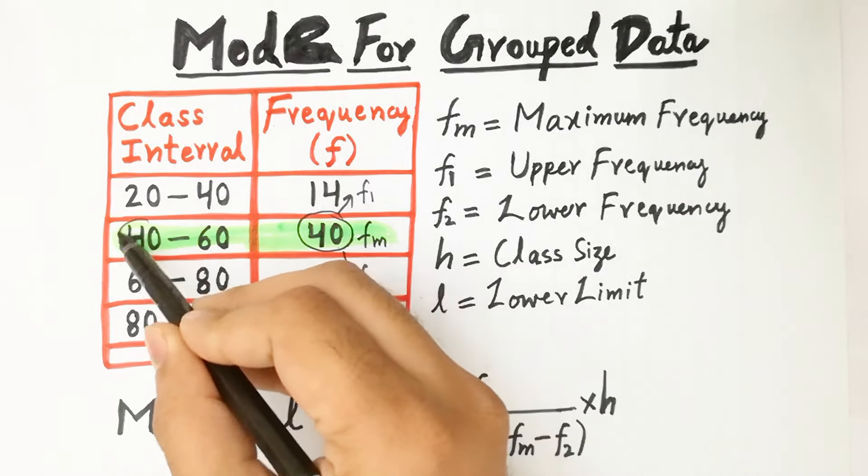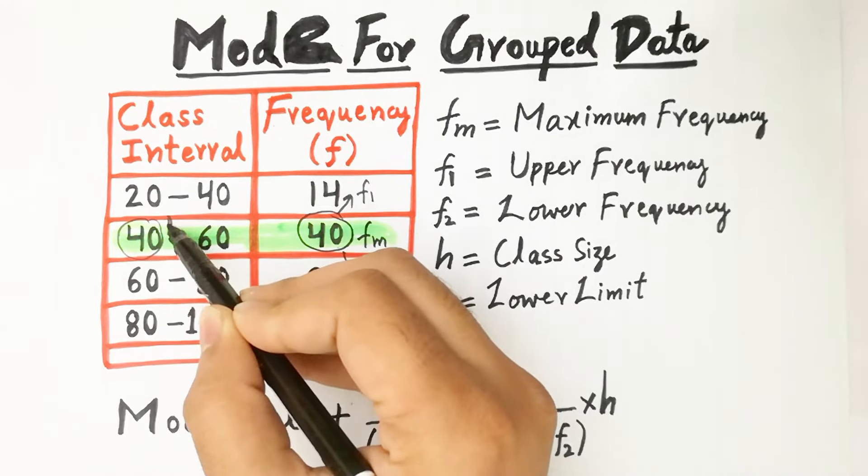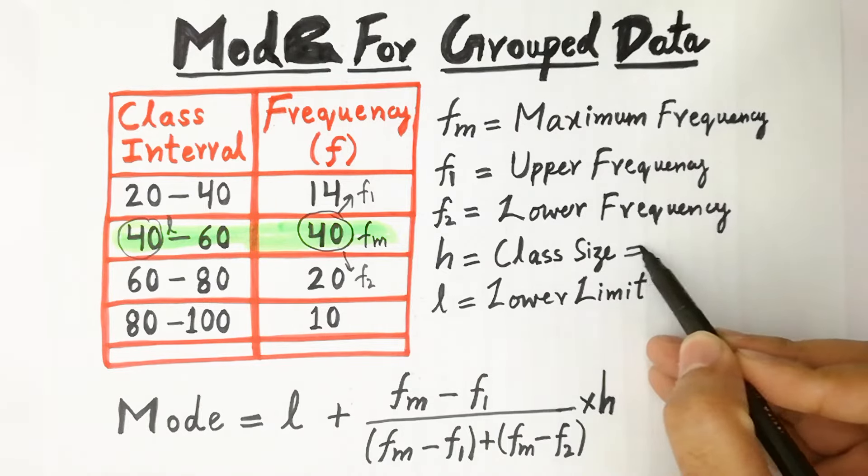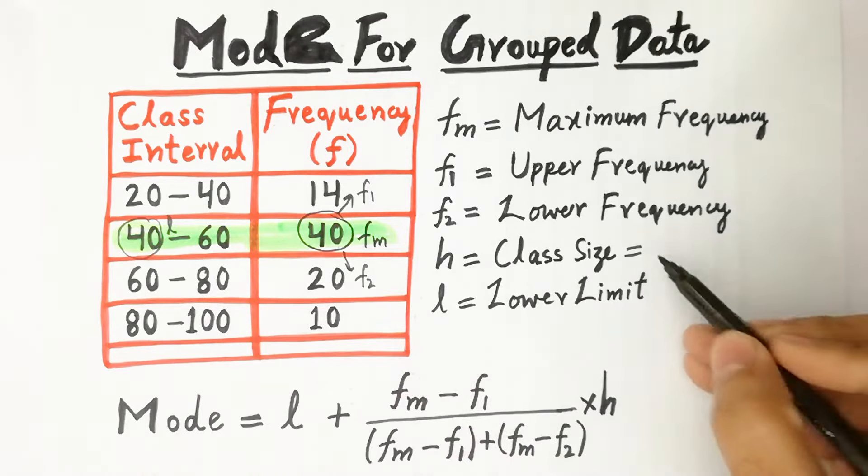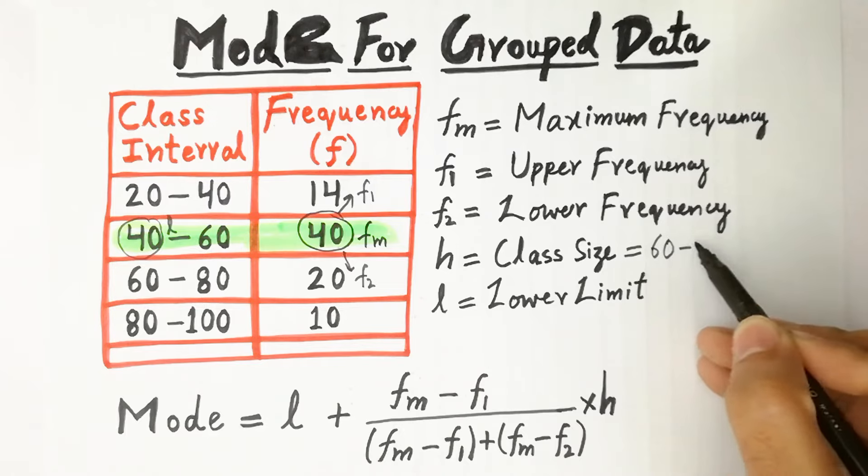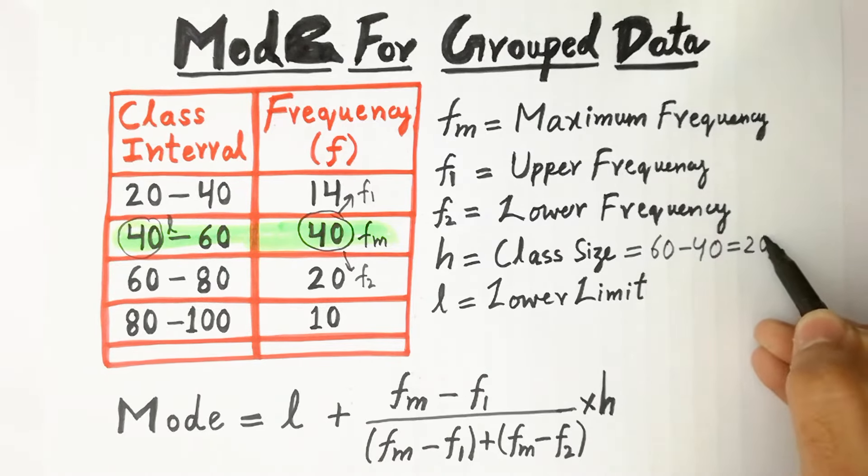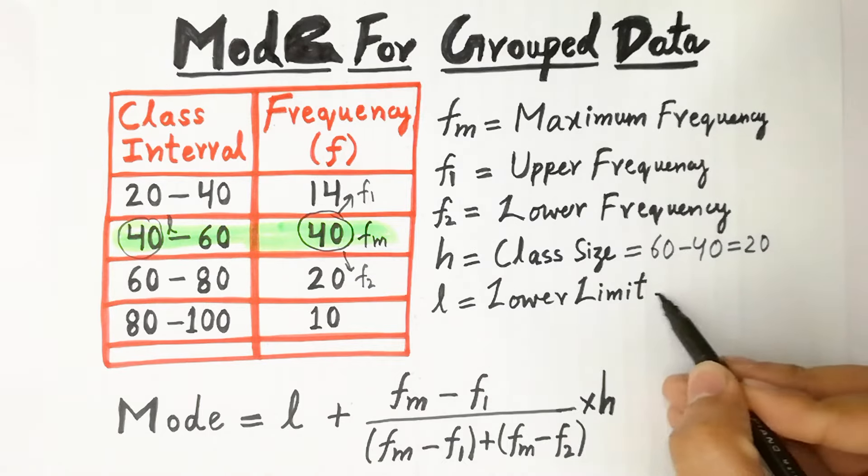L is the lower limit, so here L will be 40. H is the class size, 60 minus 40 will be equal to 20. L lower limit is 40.